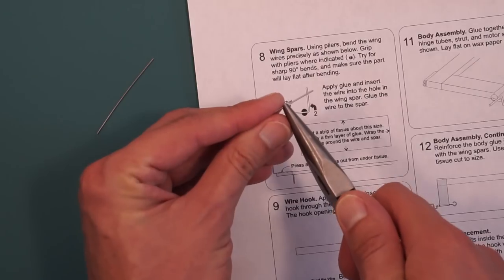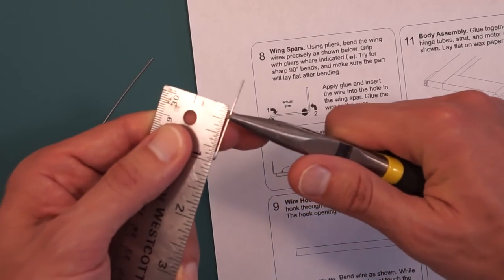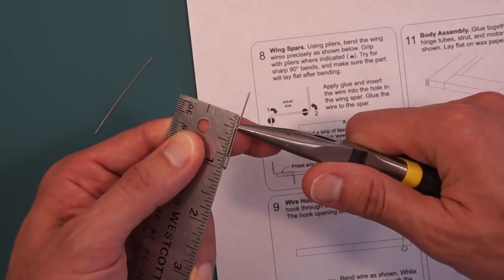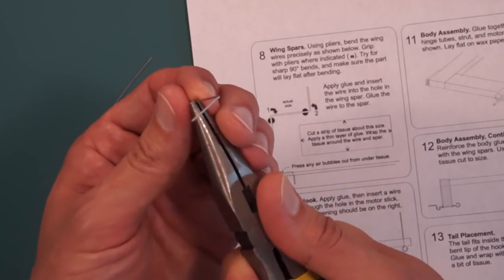Once you verify that it's the correct location, and I'll put the ruler on there, it should be like I said seven eighths. Try to anticipate where the wire is actually going to bend and go ahead and make the bend.